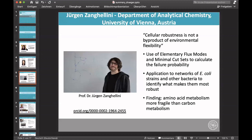The last talk was from Juergen Zanghelini from Vienna, Austria. He presented on cellular robustness, arguing that it is not a byproduct of environmental flexibility. He found that using elementary flux modes and minimal cut sets is very valuable to calculate failure probability, and applied that to E. coli and other strains of bacteria, finding that amino acid metabolism is more fragile than carbon metabolism.